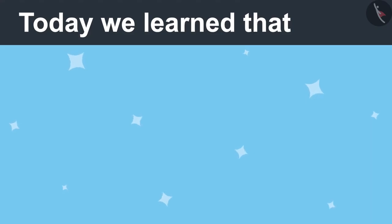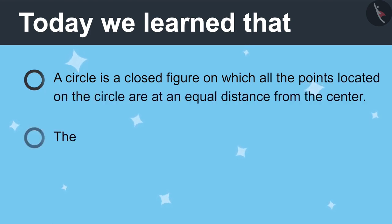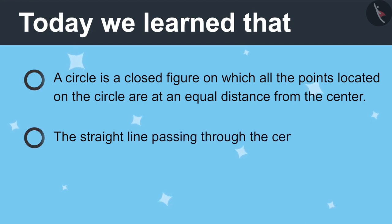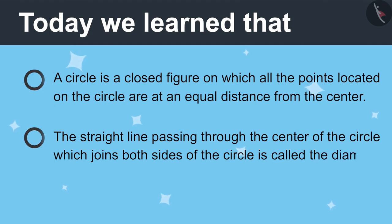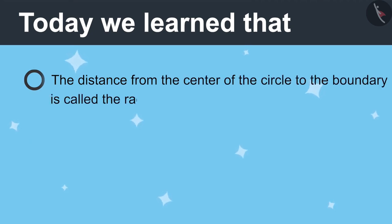Today we learned a circle is a closed figure in which all the points are at the same distance from the center. The straight line passing through the center of the circle, which meets both sides of the circle, is called the diameter of the circle. The distance from the center of the circle to the boundary is called radius.